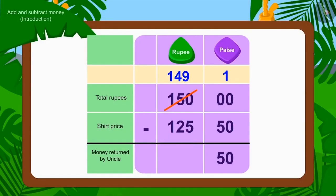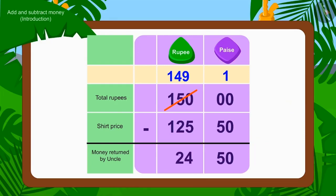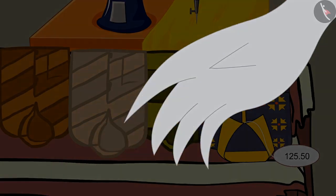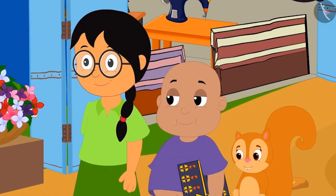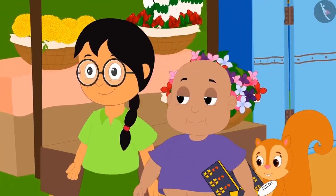Now we will subtract the number of rupees. Rs. 149.00 minus Rs. 125.00 gives Rs. 24.00. In this way, uncle will have to return them Rs. 24.50. The uncle returned the change and the three friends returned home excited with the shirt.